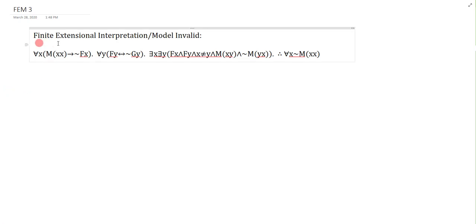In this third demo video, we'll be creating another finite extensional model to show that this argument is invalid. The main difference in this question is that the third premise contains an inequality. So the translations are not as straightforward as the previous ones, but you should see that you're actually well equipped to do this from all the previous exercises we've been doing.